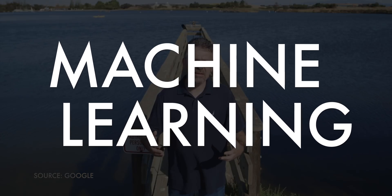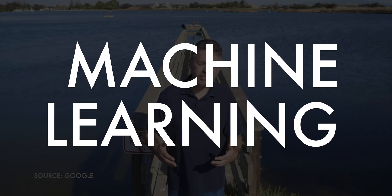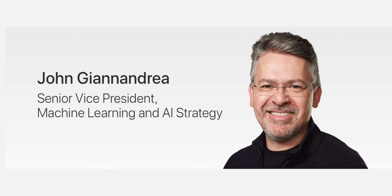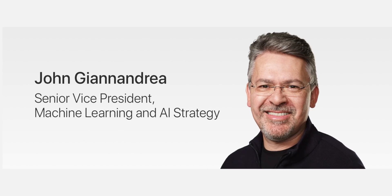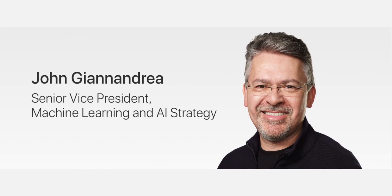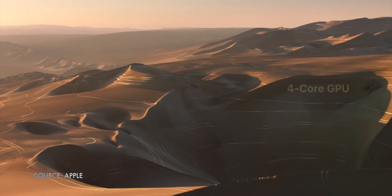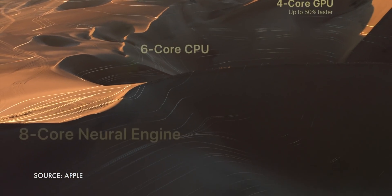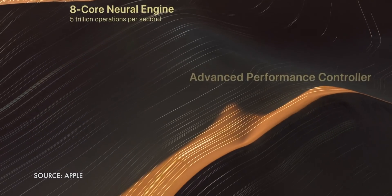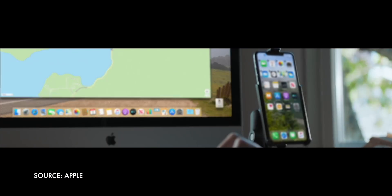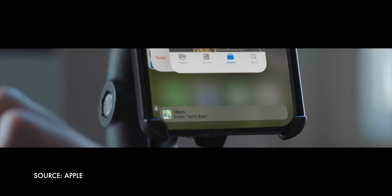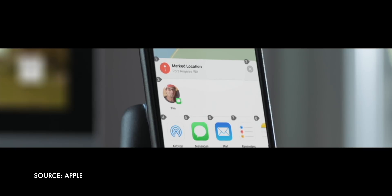John Gianandrea leaving his job as head of search and AI at Google to work on ethical machine learning at Apple, and subsequently becoming senior vice president with his own AI org, is probably gonna go down in history as the biggest thing since Johnny Srouji began heading up Silicon. It's gonna start slowly, but it's also gonna snowball. This year, there's a whole bunch of Siri and Siri-adjacent stuff coming in iOS 13, including full-on voice control.